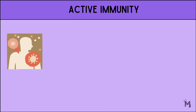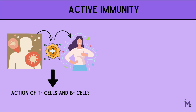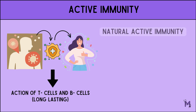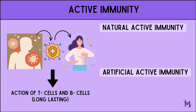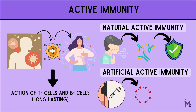When an individual acquires resistance in response to the introduction of microorganisms or toxins into the body, it is called active immunity. This is achieved due to the action of T cells and B cells, and the immunity is long-lasting. It can either occur naturally or artificially. When a person meets the microbe directly, they acquire natural active immunization. On the other hand, if the microbe as a whole or in parts is injected into the person to develop antibodies, the person thus becomes immune to said microbes — we call it artificial active immunization.